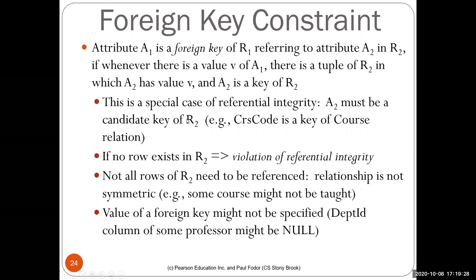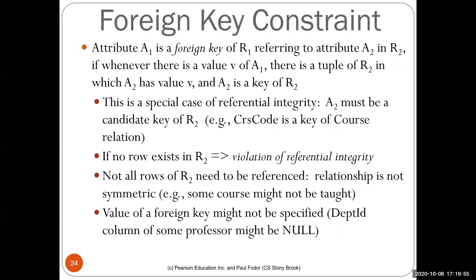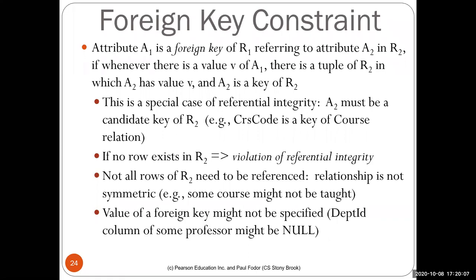A2 must be a candidate key of r2 — like the course code is a key in the course relation, and from the transcript you refer to the course code. If no matching row exists in r2, you have a violation of referential integrity. Not all rows in r2 need to be referenced — for instance, there are courses that are not currently offered. The relationship is not symmetric: all foreign keys must refer to a course that exists, but not all courses listed must be offered.